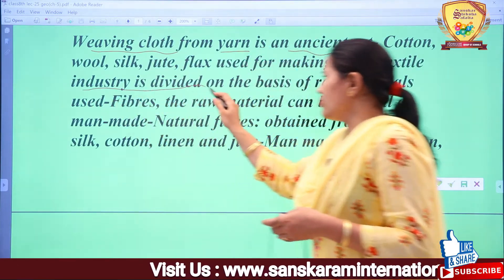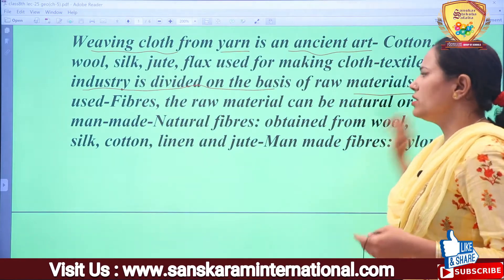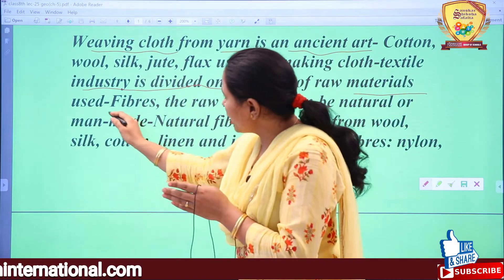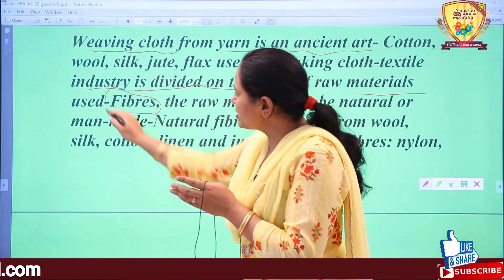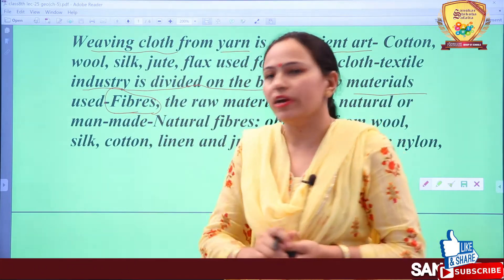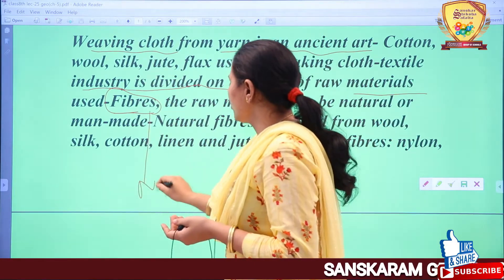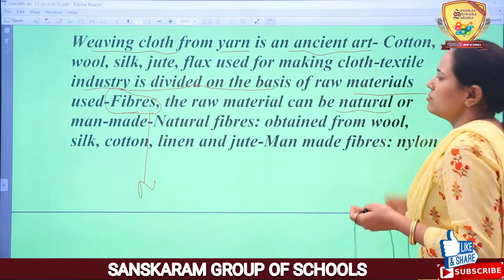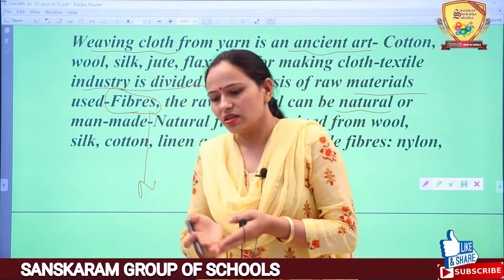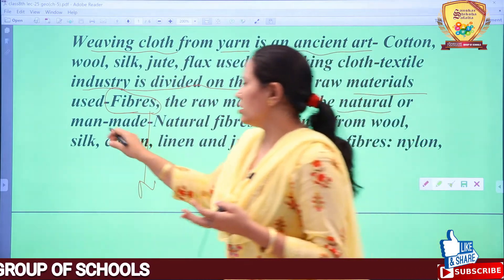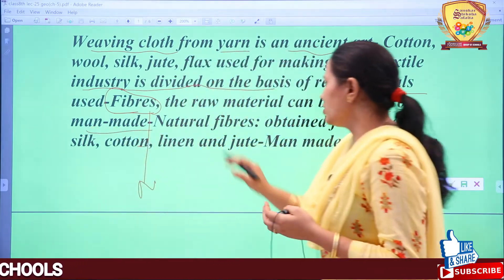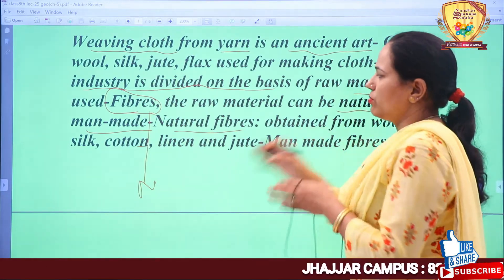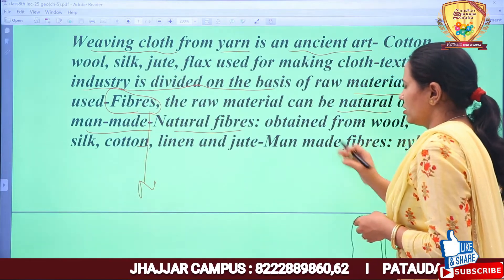Cotton, wool, silk, jute, and flax are used for making cloth in the textile industry. The cloth textile industry is divided on the basis of raw material. Raw materials can be natural - received from nature, meaning grown through farming - or man-made. Both types of fibers exist: natural fibers and human-made fibers.